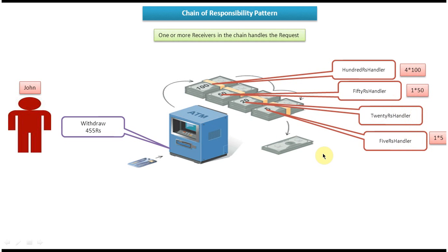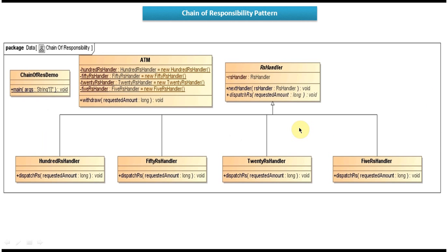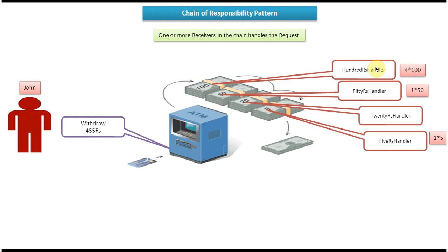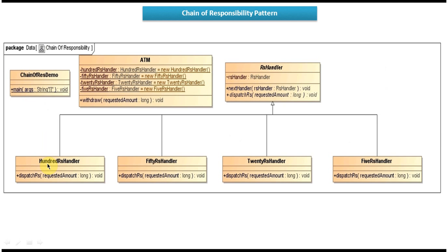This is the example of one or more receivers in the chain handling a request. Now let's look at the class diagram to see how we can achieve this scenario. Here you can see RupeesHandler, which is an abstract class with two methods: nextHandler and dispatchRupees. The dispatchRupees method is abstract. We have corresponding subclasses: 100 Rupees handler, 50 Rupees handler, 20 Rupees handler, and 5 Rupees handler — all subclasses of RupeesHandler.